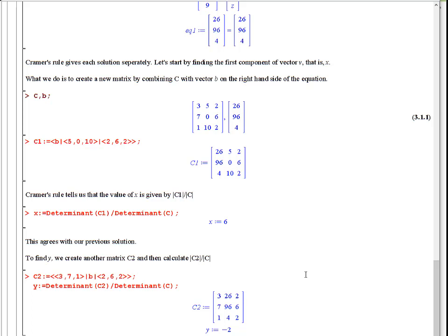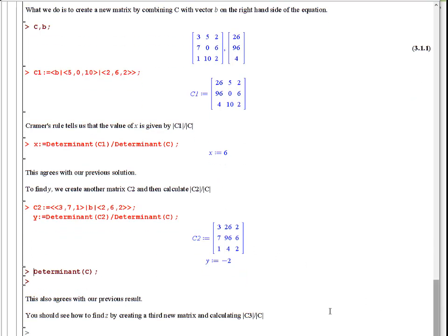And then to find z, you just repeat the same thing, make another matrix, replacing the last column with the right-hand side, 26, 96, 4, and the determinant of C3 divided by the original determinant will give you z.